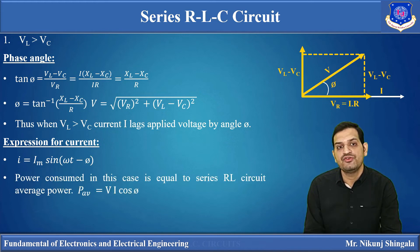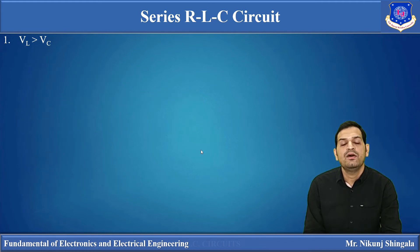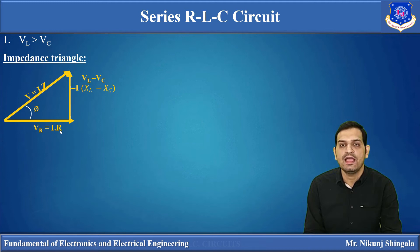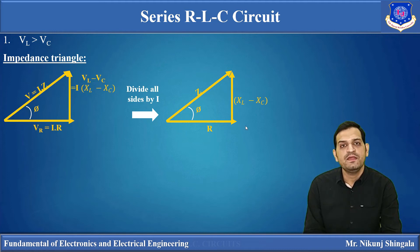Now considering the power consumed in this circuit: since the circuit behaves as a series RL circuit when Vl > Vc, the average power P = VI·cos(φ), which is the power consumed by the resistive element. For the impedance triangle when Vl > Vc: starting from the voltage triangle with sides Vr = IR, (Vl − Vc) = I(XL − Xc), and V = IZ — dividing all sides by current I gives the impedance triangle, showing the relationship between R, Z, and X. From this, the power factor cos(φ) = R/Z.